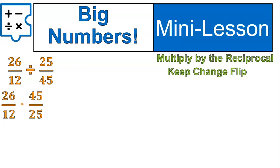You are going to solve it the same way you solved everything else by multiplying by the reciprocal. So, 26 over 12 times 45 over 25. Everything stayed the same as the previous questions. The division changed to multiplication. The second fraction got flipped over. Having big numbers does not change that step. It also doesn't change the multiply step. We still multiply 26 times 45 and 12 times 25.